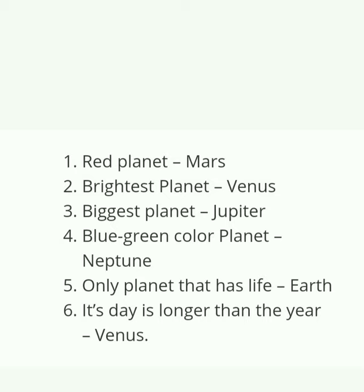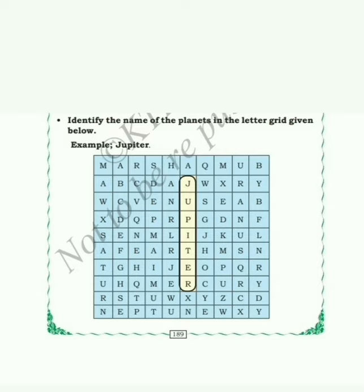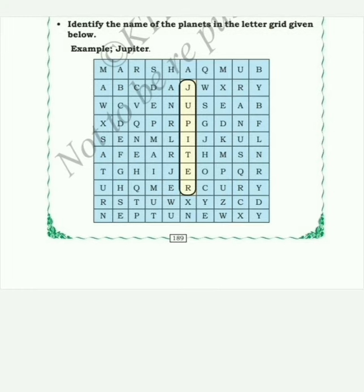Now let's identify the names of planets in a letter grid. An example is already given: Jupiter. Looking through the grid, we can find M-A-R-S — Mars is a planet of the solar system.